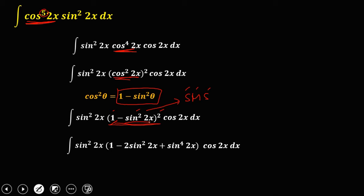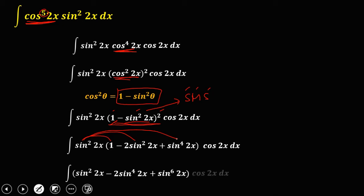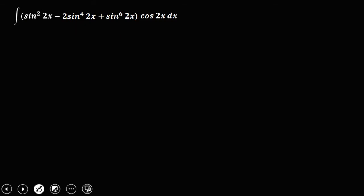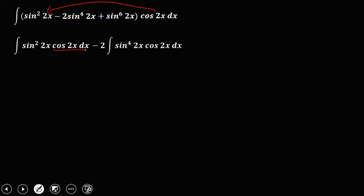Distribute sine squared 2x to every term: sine squared 2x, minus 2 sine to the power 4 of 2x (adding the exponents), plus sine to the power 6 of 2x, times cosine 2x dx. Now integrate every term: the integral of sine squared 2x times cosine 2x dx, minus 2 times the integral of sine to the power 4 of 2x times cosine 2x dx, plus the integral of sine to the power 6 of 2x times cosine 2x dx.